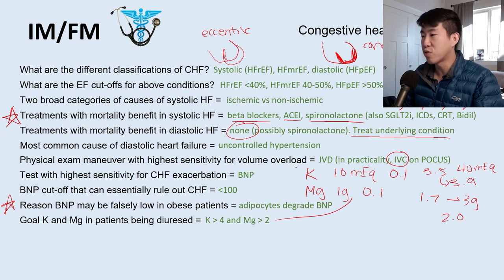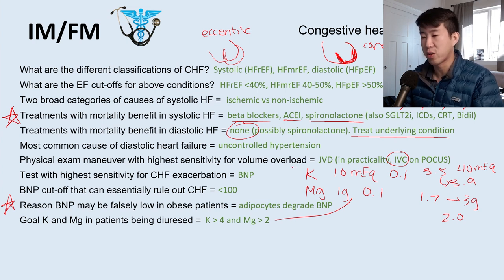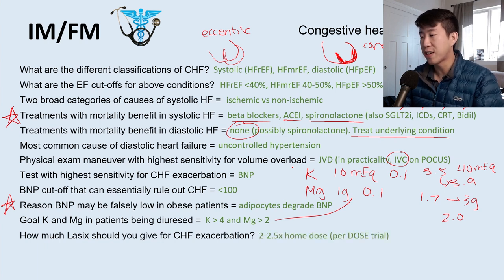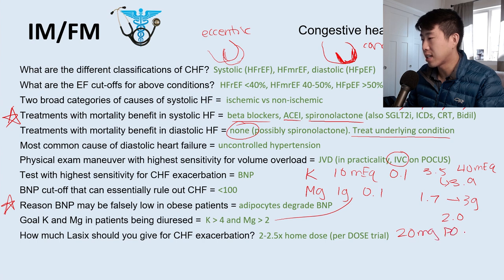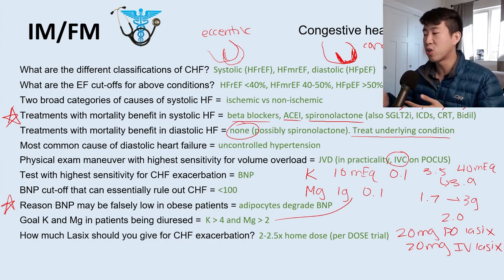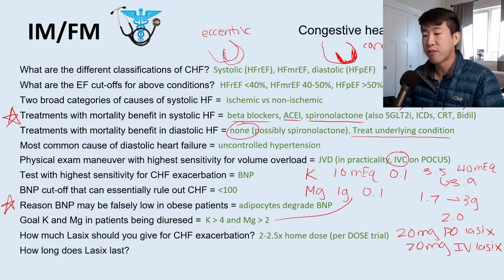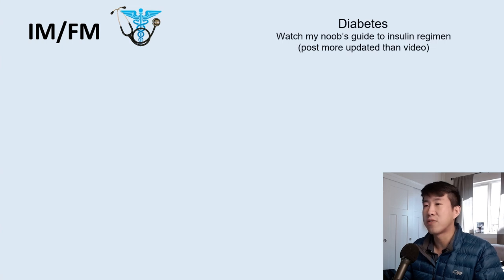How much Lasix to give for a CHF exacerbation: 2 to 2.5 times the home dose based on the DOSE trial. If someone is on 20 mg PO Lasix daily at home, we convert to 20 mg IV Lasix because IV is already roughly double the oral dose. Lasix lasts 6 hours — that's basically why it's called Lasix.